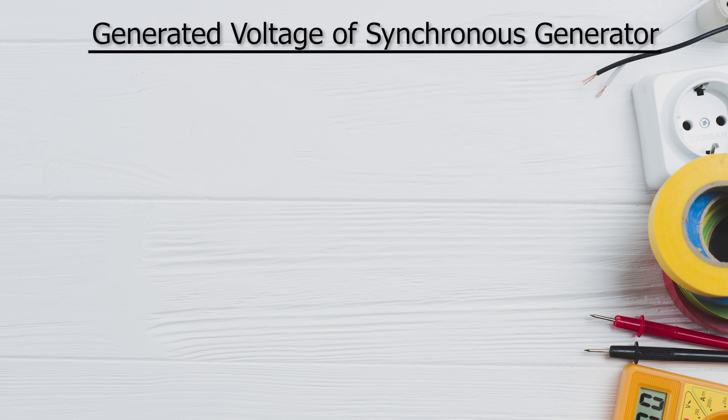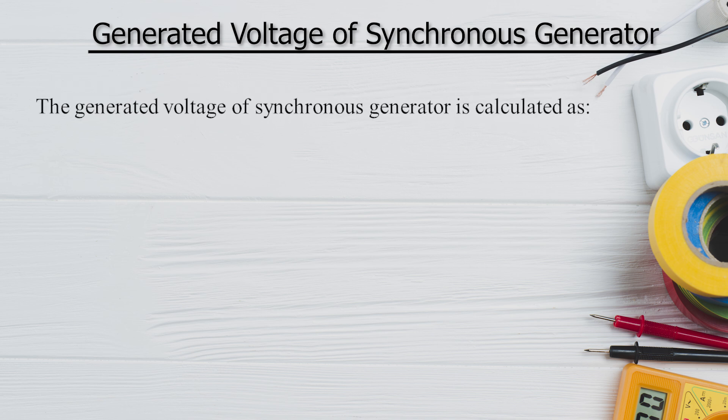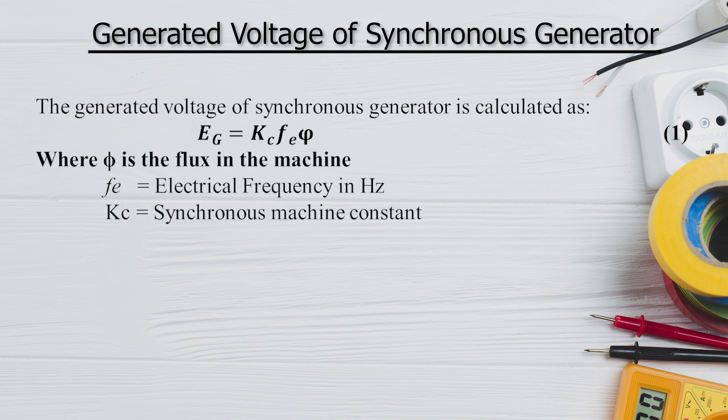The generated voltage of a synchronous generator is given by the equation: Eg = Kc × Fe × Φ, where Kc is the synchronous machine constant, Fe is the electrical frequency in hertz, and Φ is the flux in the machine.